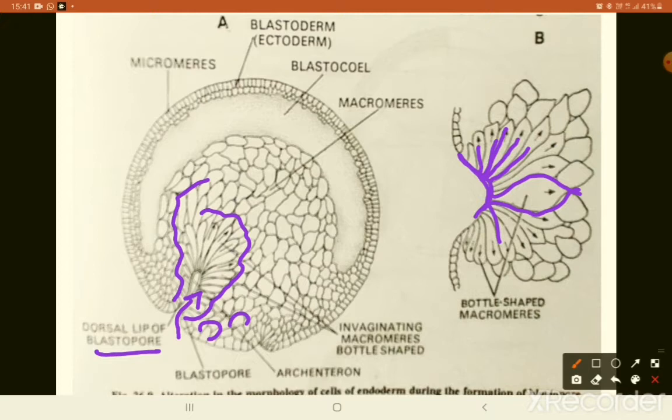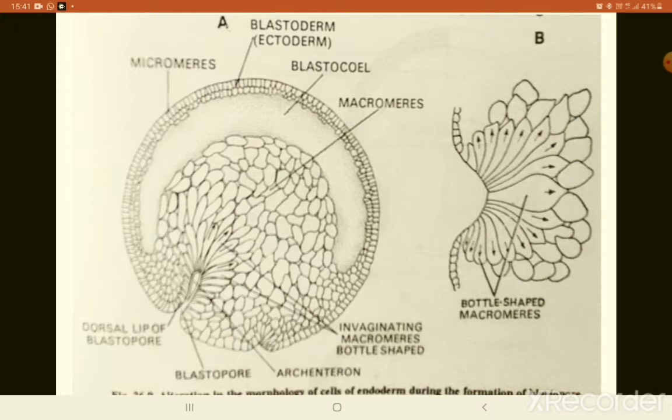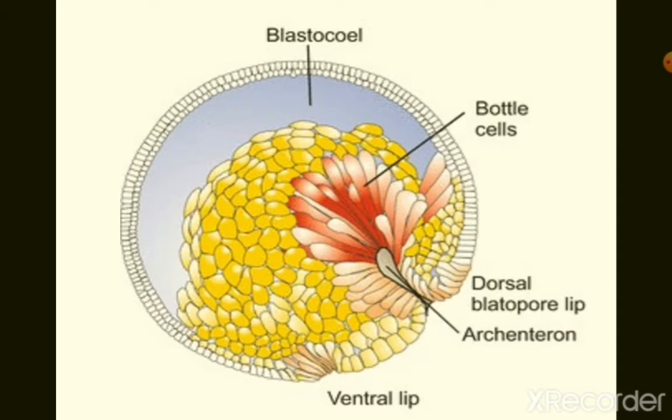The first step in gastrulation is the formation of bottle cells, which initiates the process of invagination. As cells are pulled inward, a groove forms that later becomes the archenteron. As more and more cells invaginate, the blastocele becomes reduced in size and is replaced by the archenteron.